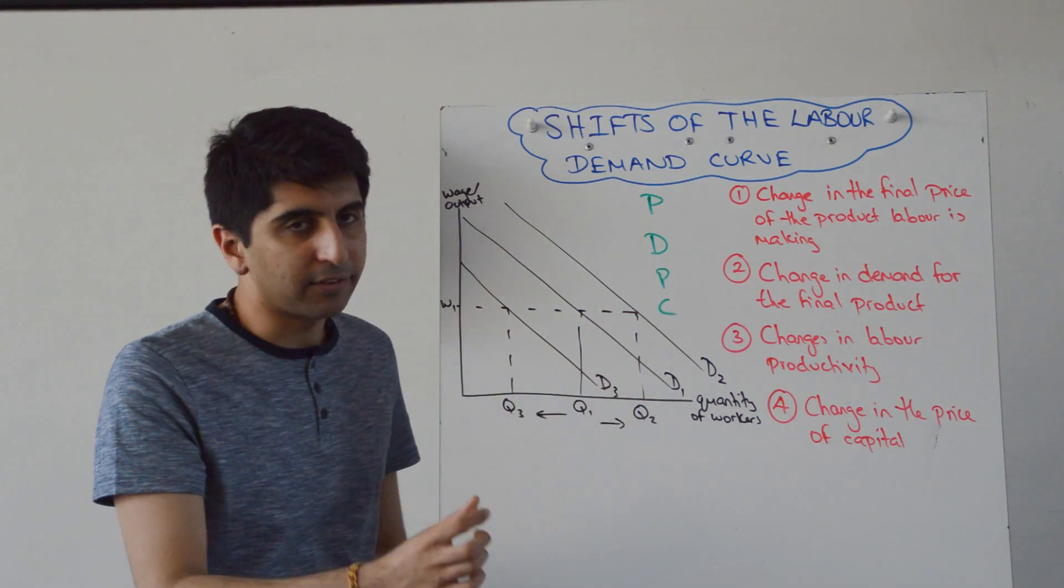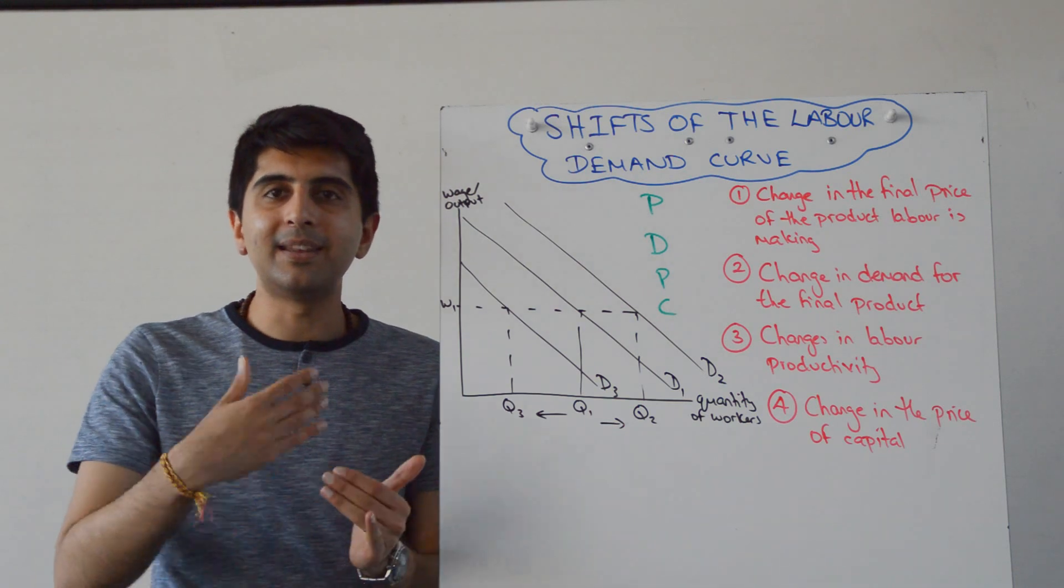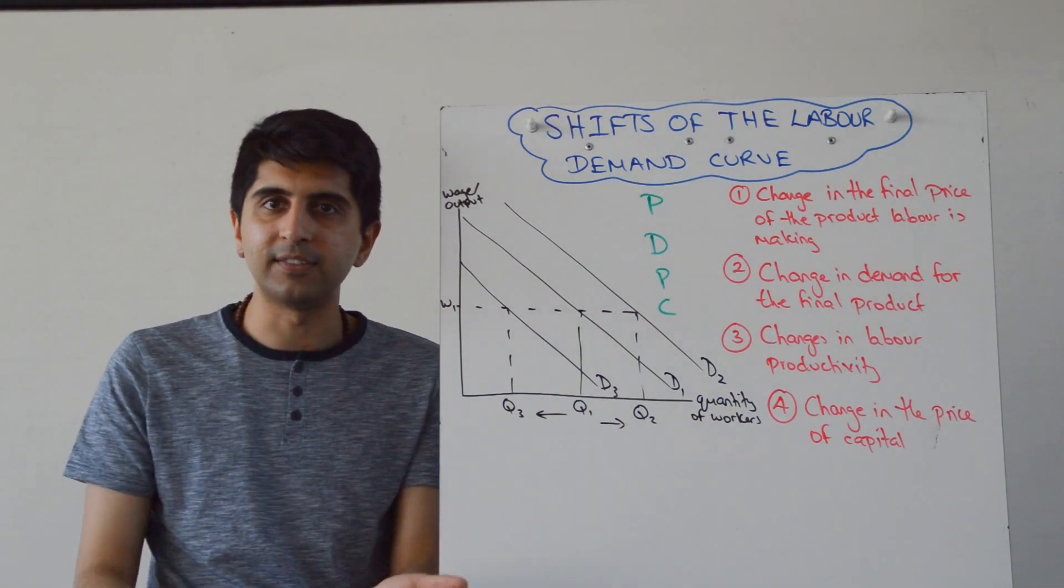The D stands for demand of the final product. If demand for the final product increases, demand for labour to make it will also increase. Labour is a derived demand. So that one's quite simple.